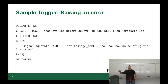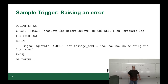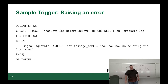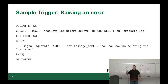In MySQL, you can also raise an error in a trigger. This trigger is before delete — you don't want anybody to be able to delete data out of a products log. What's the point of a log if somebody can just delete it? For each row, it begins, and because MySQL doesn't have a nice raise error message, you use: signal sqlstate 45000 set message_text equal to 'no, no, no, no deleting'.